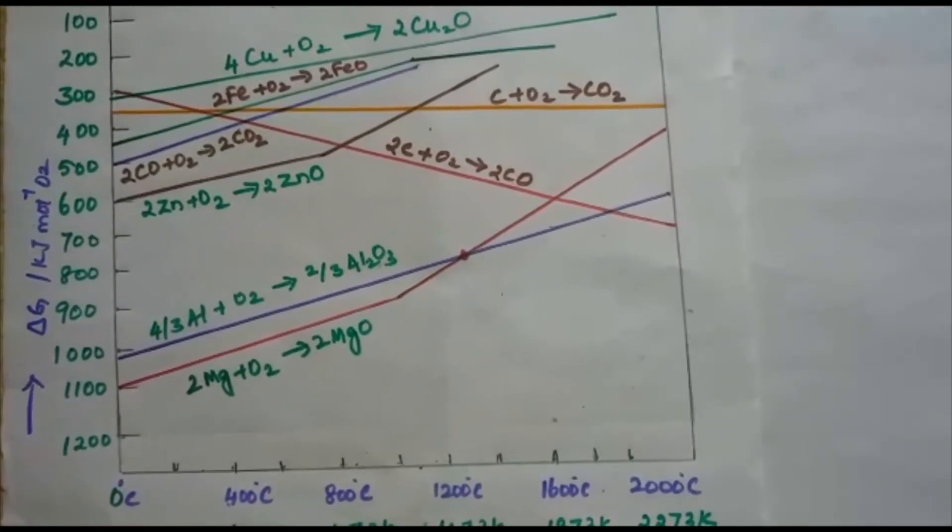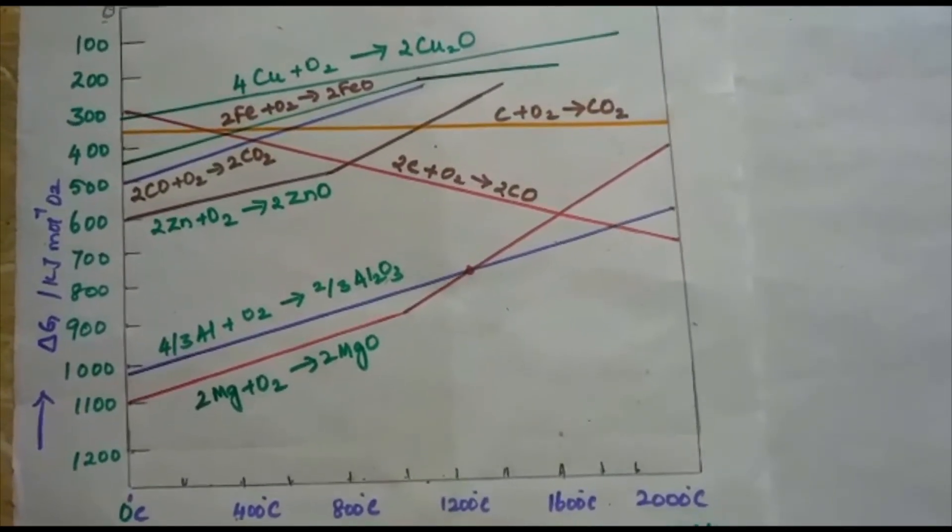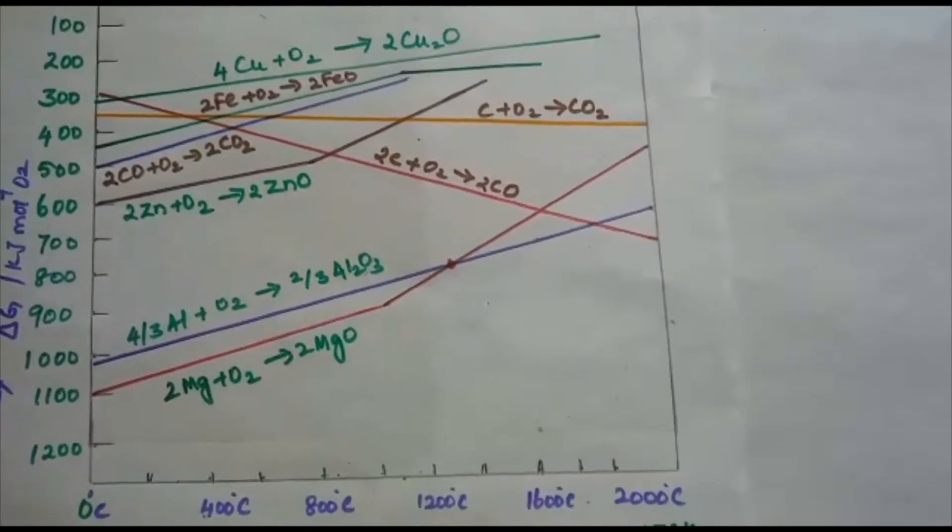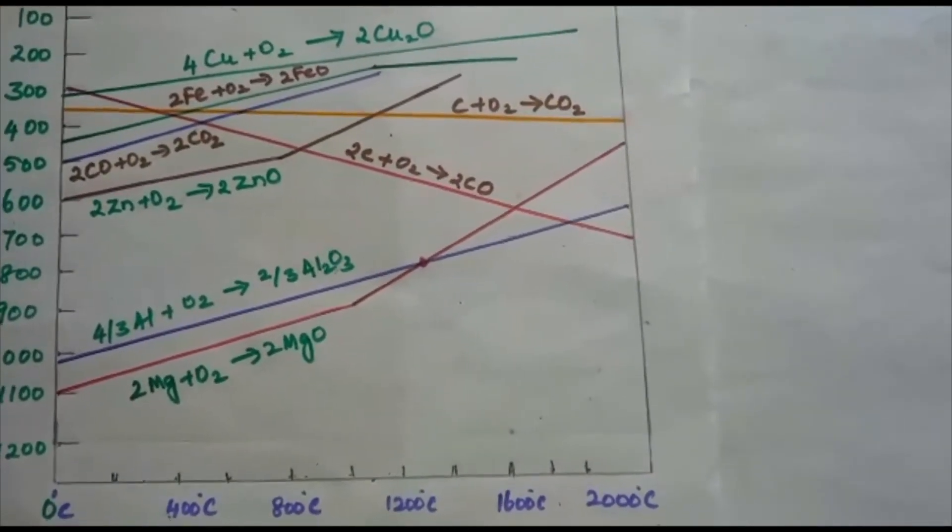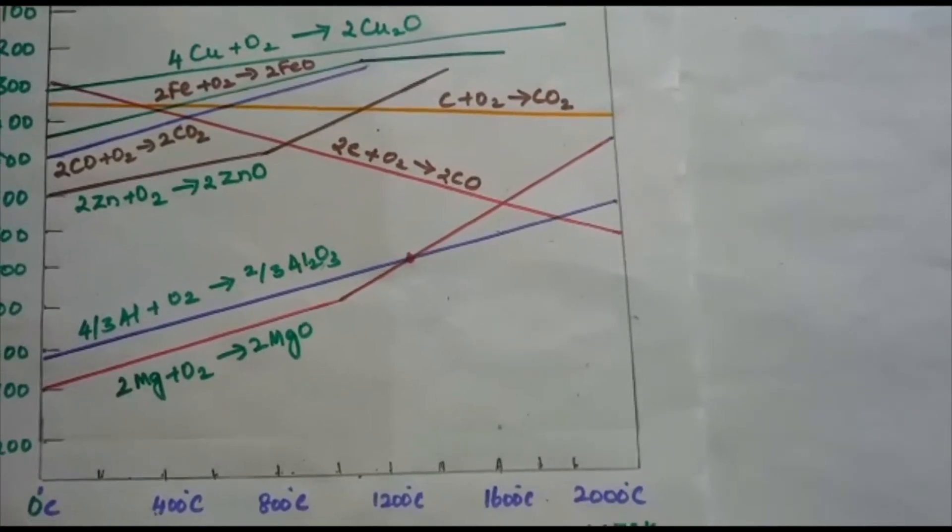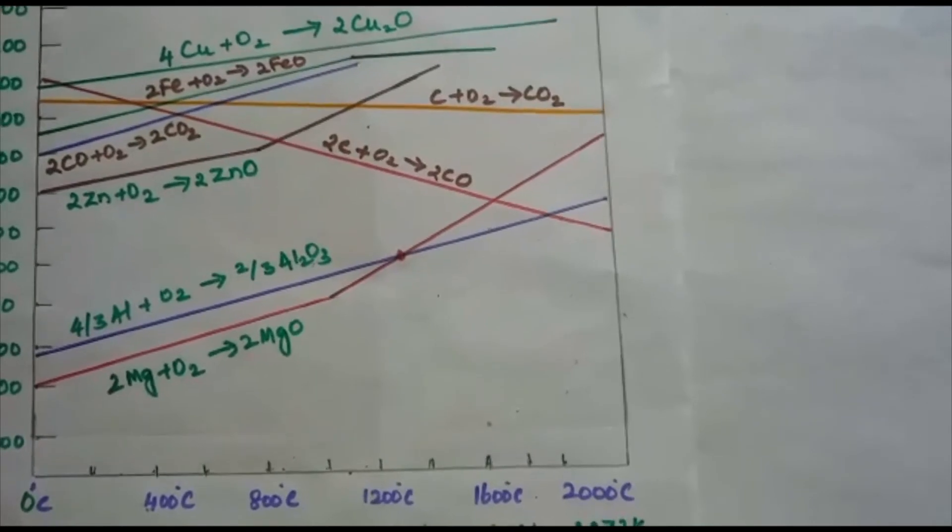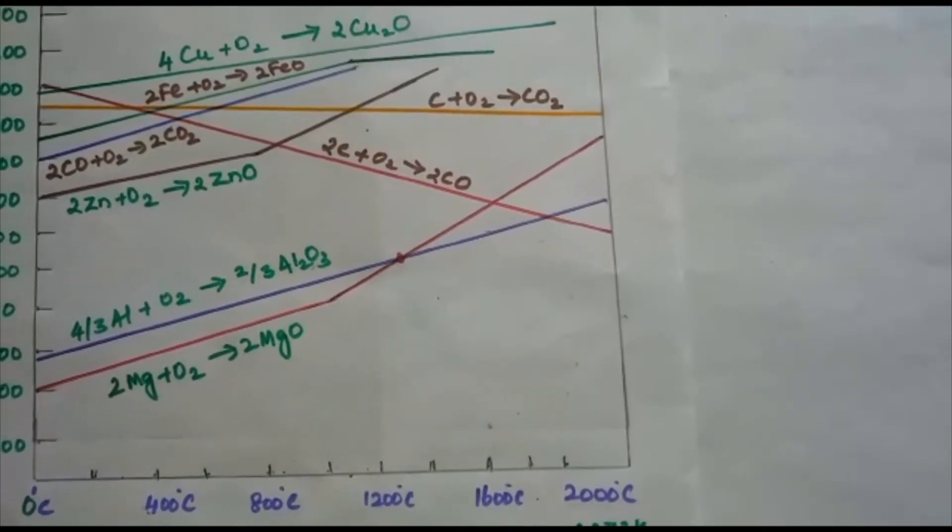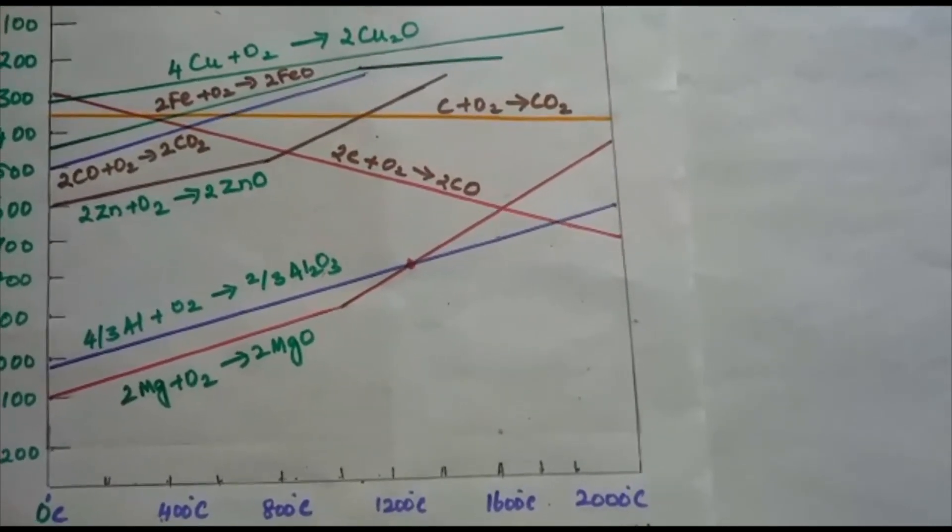However, it explains how the reactions are sluggish when every species is in solid state and smooth when the ore melts down. It is also interesting to note that delta H, the enthalpy change, and delta S, the entropy change, these values for any chemical reaction remain nearly constant even on varying temperature.